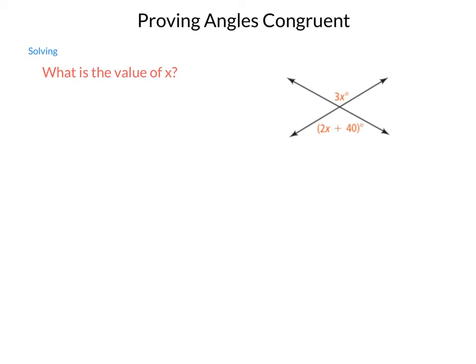In here, we can then expand that to include the idea that 3x is going to equal 2x plus 40. Now, using our subtraction property of equality, I can subtract 2x from each side, and I end up with x equals 40.